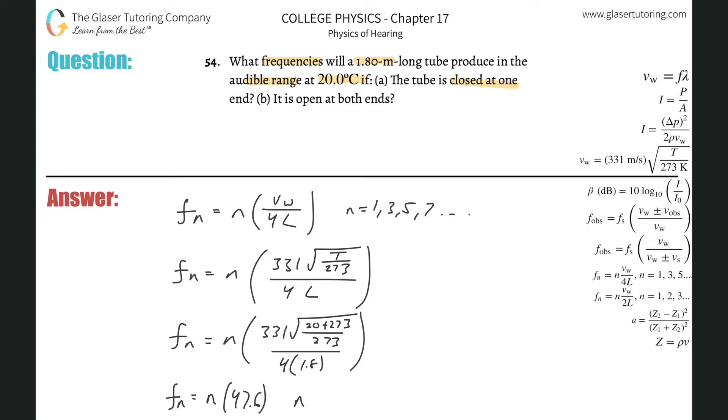So n could be equal to 1, 3, 5, 7, and so on, all the way to when we get to a value of 20,000 here for the frequency of the nth harmonic.